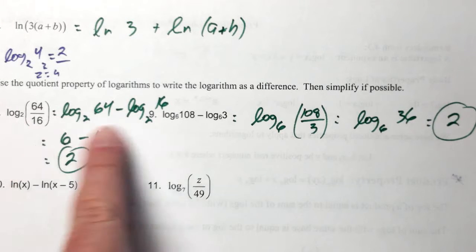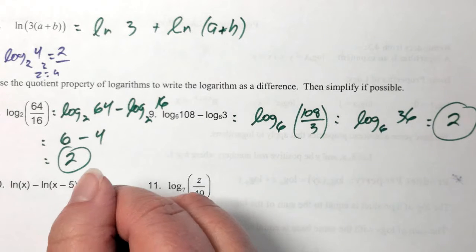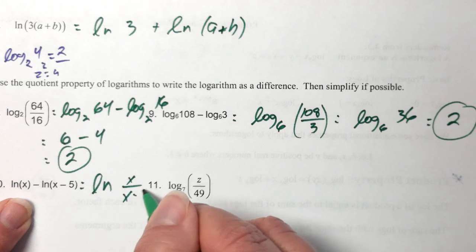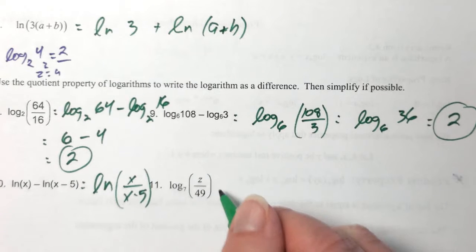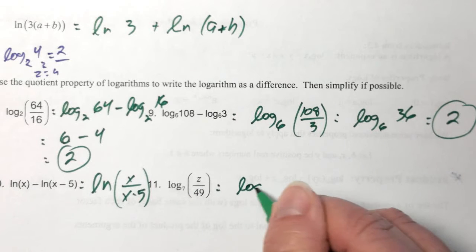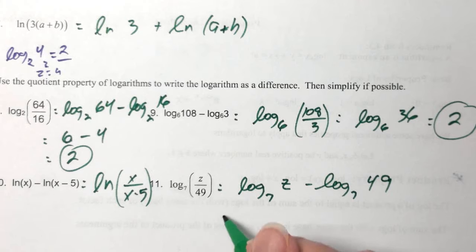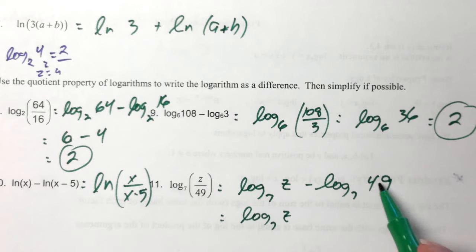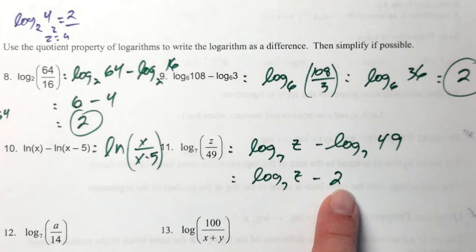Here's one where we have a single log to split using the quotient property, and one where we have multiple logs to combine using the quotient property. For the combination: since we have subtraction, we take the first argument divided by the second one — ln of (4x minus 3) over x — and put parentheses around that to show the entire thing is the argument. Here's one with a quotient to split: log base seven of z/49 gives log base seven of z minus log base seven of 49. Log base seven of 49 is two since seven squared is 49.